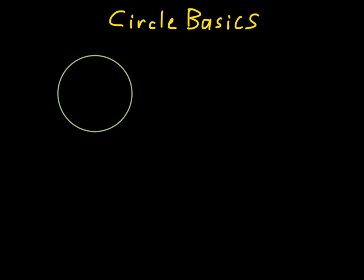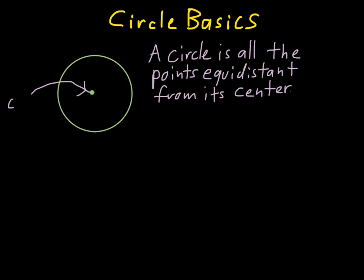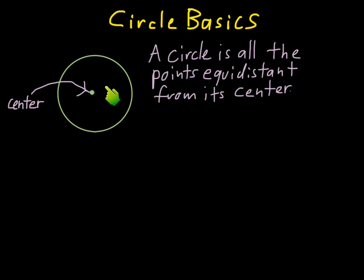This little video is about circle basics. A circle is just all the points that are equidistant from its center. Let's say we have a center of a circle — it's all of the points that are the same distance from that spot. You can see that all of the edge, all the way around the circle, is the exact same distance from the center. That's the definition of a circle.